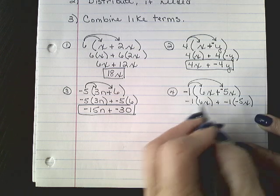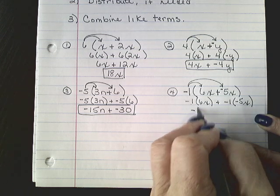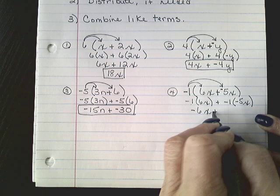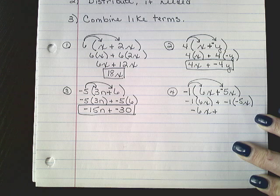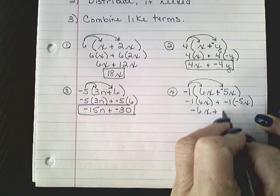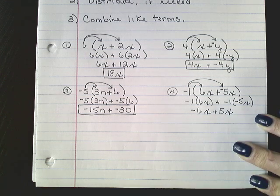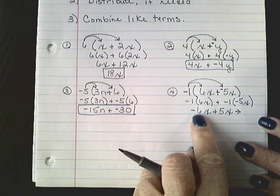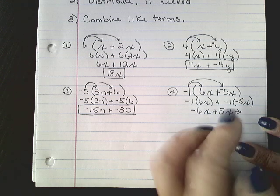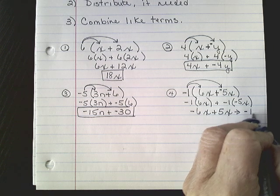Negative 1 times 6x is negative 6x. Negative 1 times negative 5, a negative times a negative is a positive. Positive 5x. Negative 6x. When I combine these two terms, negative 6 plus 5 would give me negative 1x.